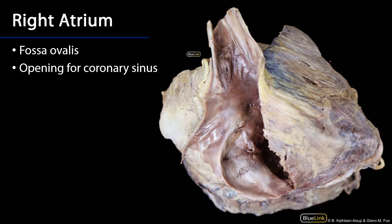It's at the superior point of that ridge of tissue — the crista terminalis — where the SA node is going to live. Looking at this more right-surface view, you can still see the superior vena cava and the inferior vena cava. Here is a very nice interatrial septum, and right about there is the fossa ovalis, a remnant of the foramen ovale.